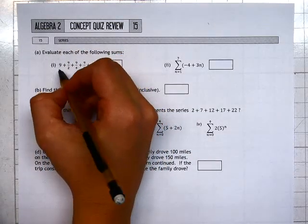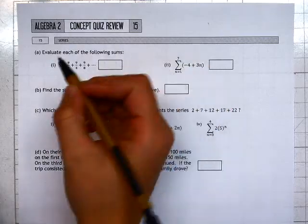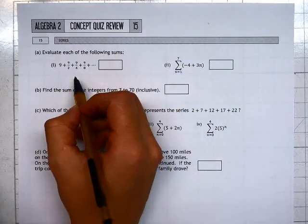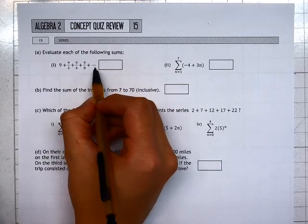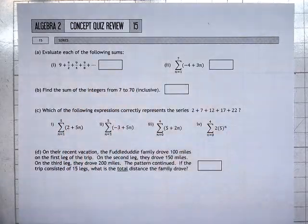On concept 15, question A, part 1, we're evaluating the sum of the series 9 plus 9 halves plus 9 fourths and so on and so forth. Because it ends with dot dot dot, that implies this is going to be an infinite series.